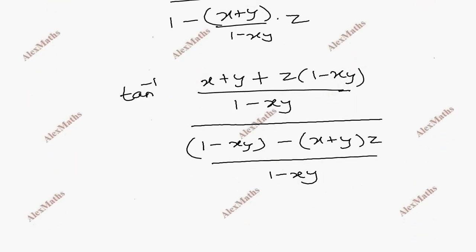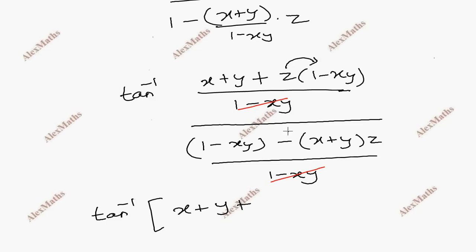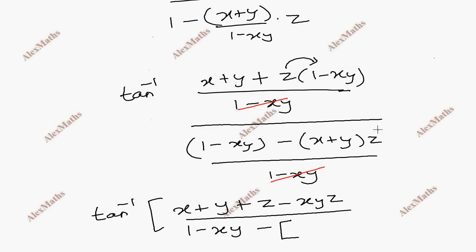Applying the LCM, we get tan inverse with numerator: X plus Y plus Z times (1 minus XY). After canceling, the numerator simplifies to X plus Y plus Z minus XYZ.